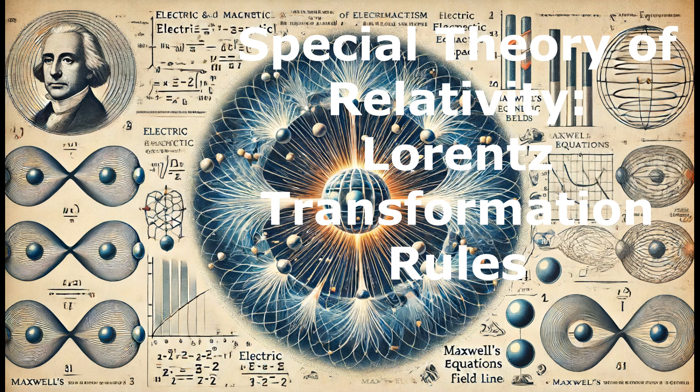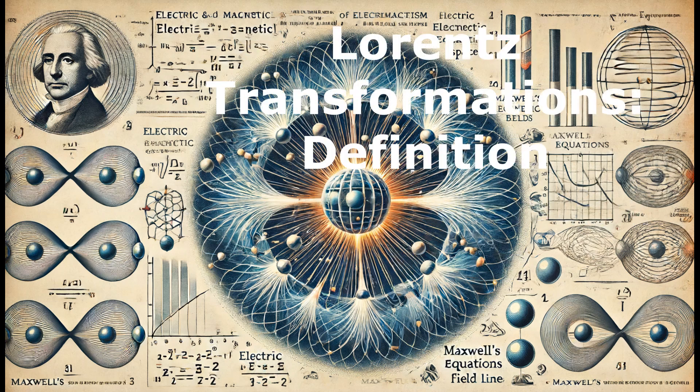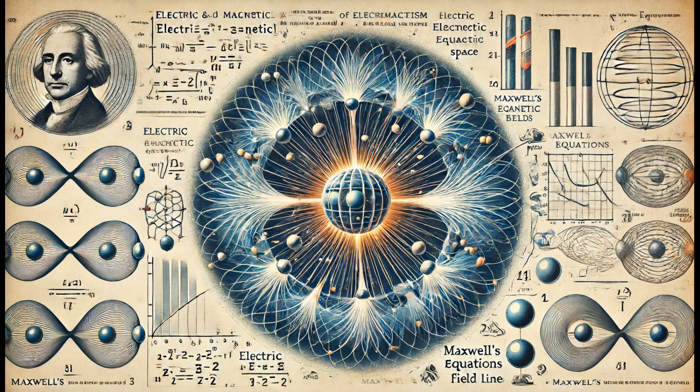The laws of electromagnetism, including Maxwell's equations, describe how electric and magnetic fields interact and propagate. One of the fundamental predictions of these laws is that light travels at a constant speed regardless of the motion of the source or the observer.